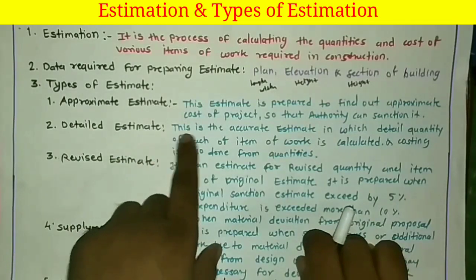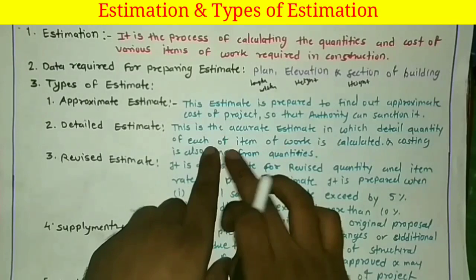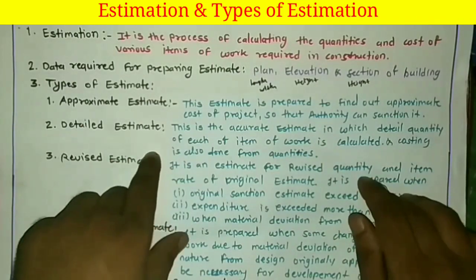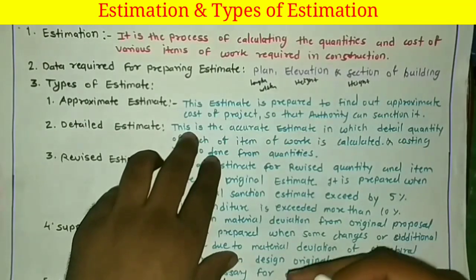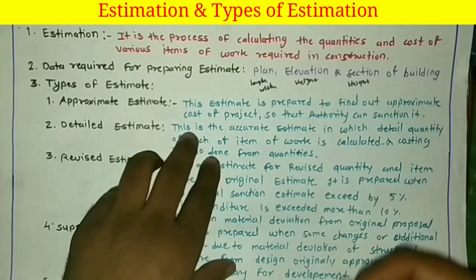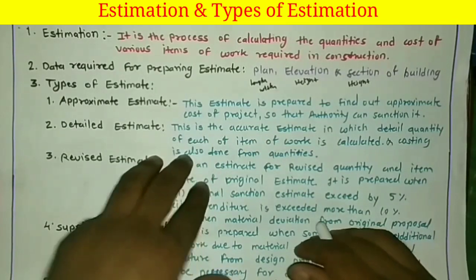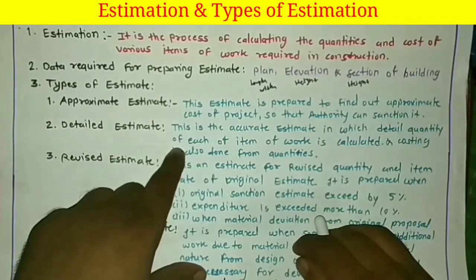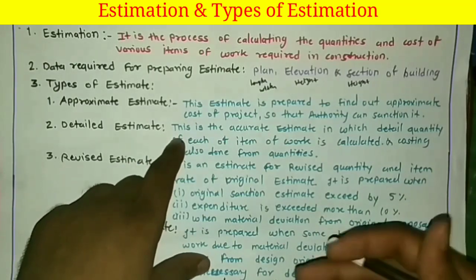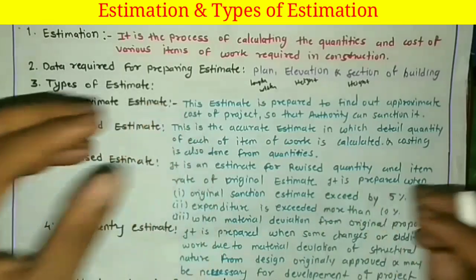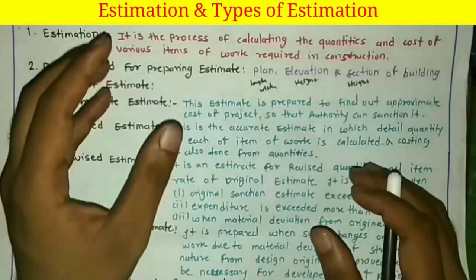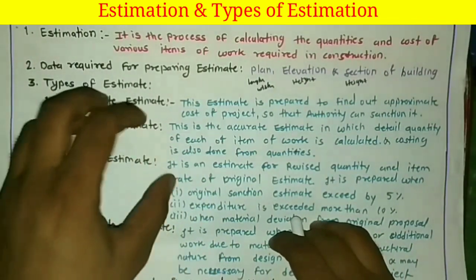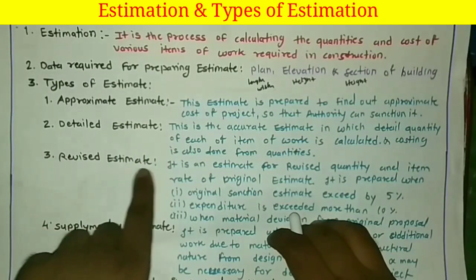The detail estimate is the accurate estimate in which the detailed quantity of each item of work is calculated and costing is also done from those quantities. This is the most important estimate — each and every quantity of every item of work is calculated, and the cost of work is also calculated. The detail estimate is a contract document and is also prepared for government permission. Each and every quantity is calculated, multiplied by its rate, and the final costing is done.